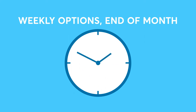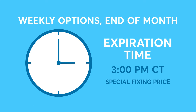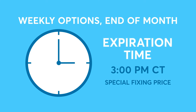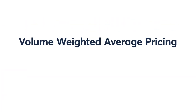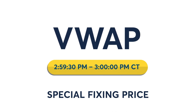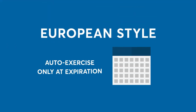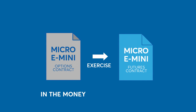The end-of-month options are also European-style, and all of the non-quarterly options will expire at 3 p.m. Central Time and expire based on the special fixing price of the corresponding E-Mini future for that day. The special fixing price is based on the weighted average trading price of the E-Mini futures in the last 30 seconds of trading before the cash equity markets close. This is referred to as the ESF for the E-Mini S&P 500 futures and NQF for the E-Mini NASDAQ 100 futures. All the European Micro E-Mini options will auto-exercise at expiration, meaning the clearinghouse will automatically exercise in-the-money options, just like their classic E-Mini option counterparts.